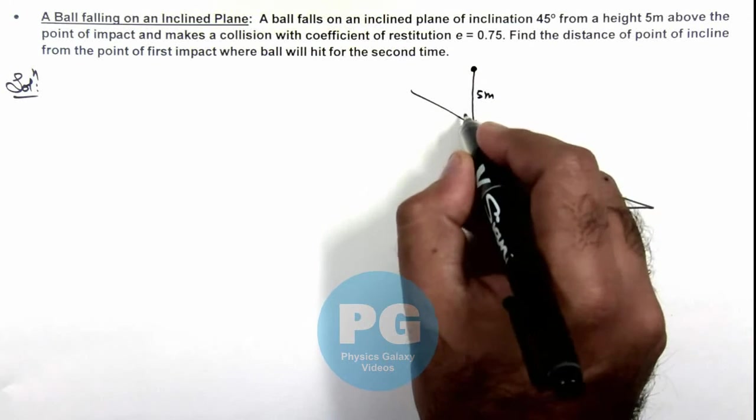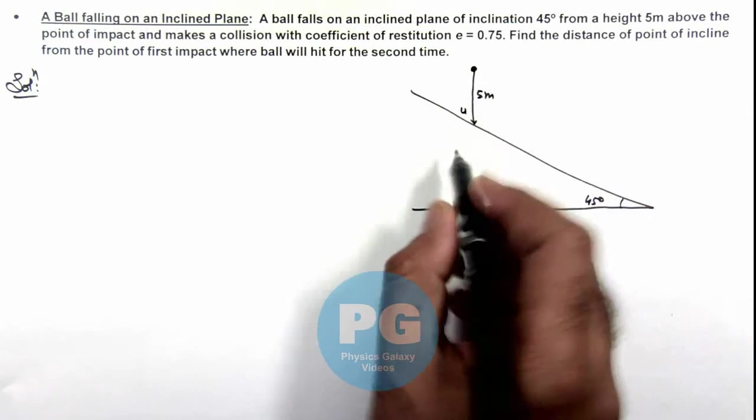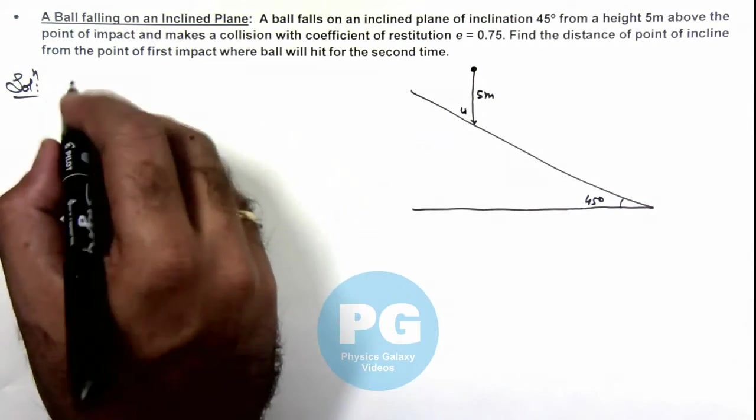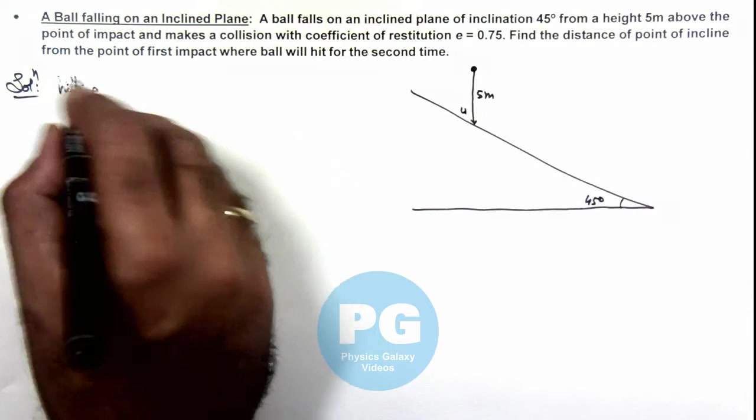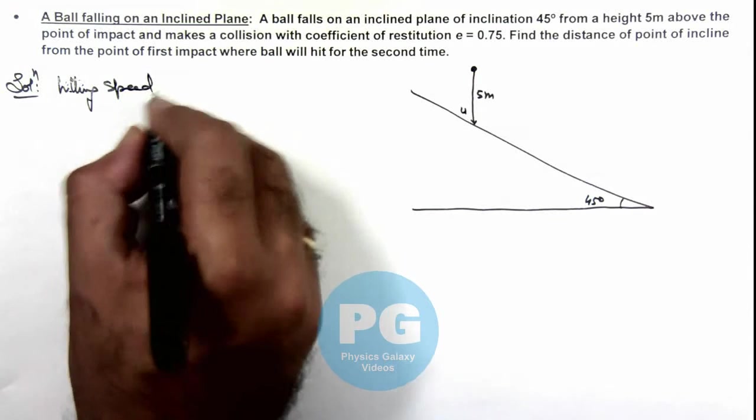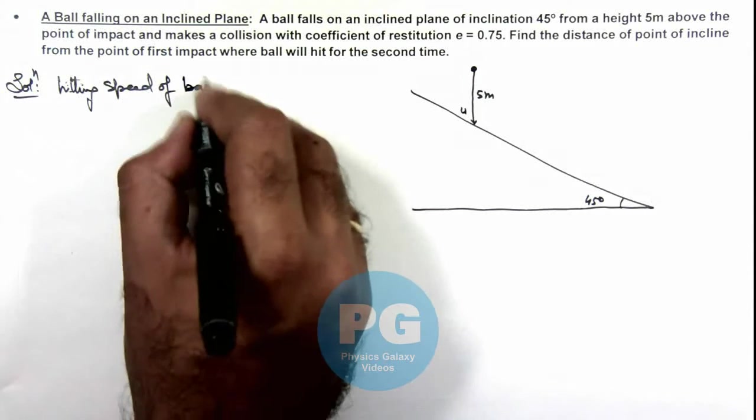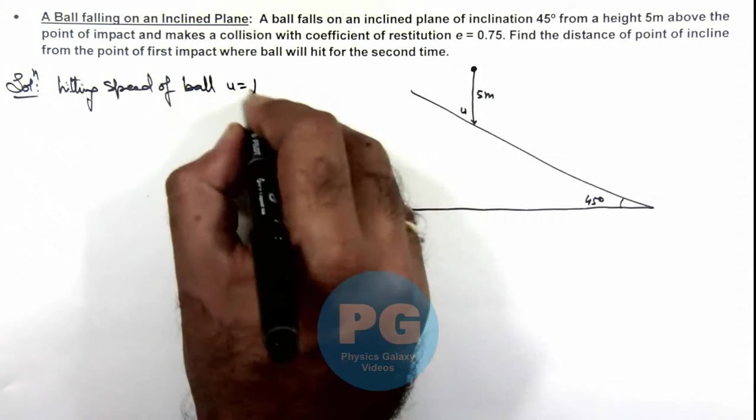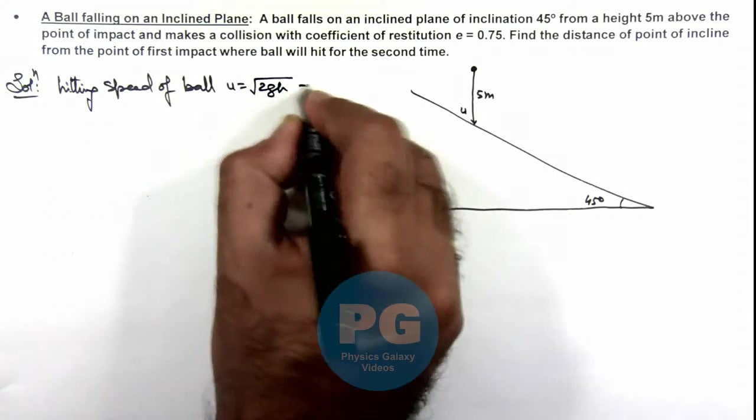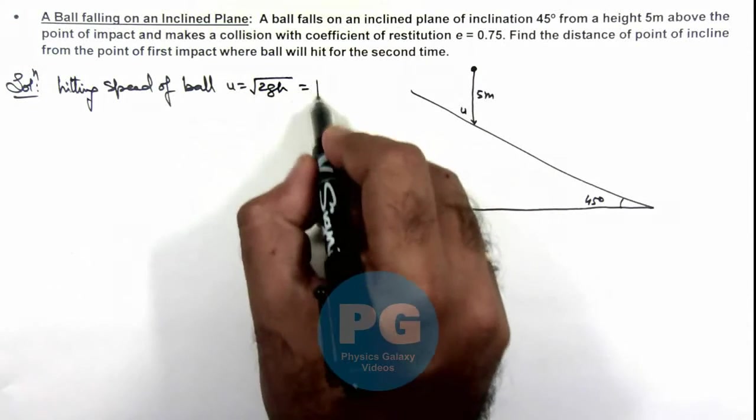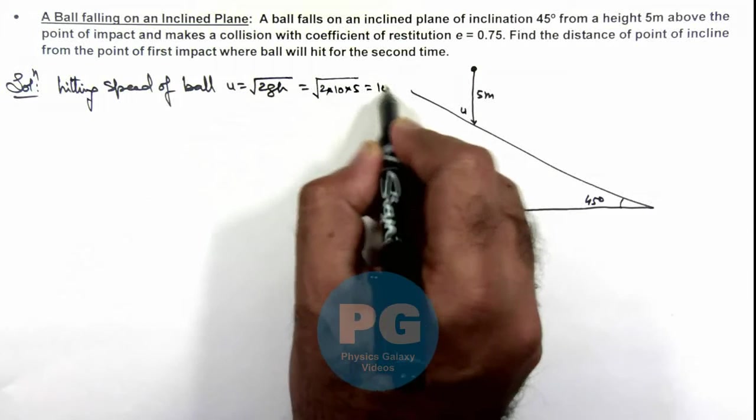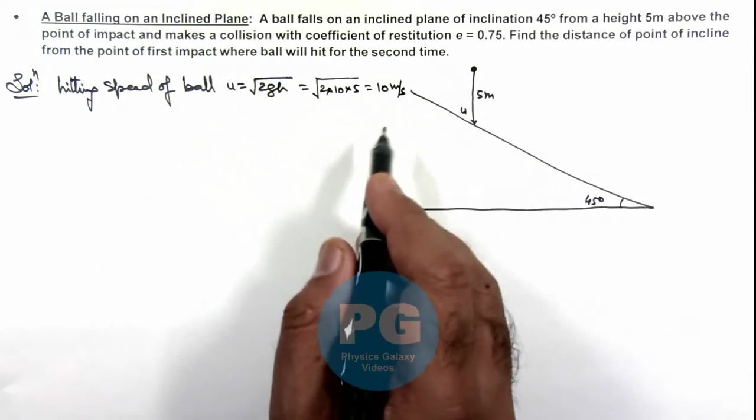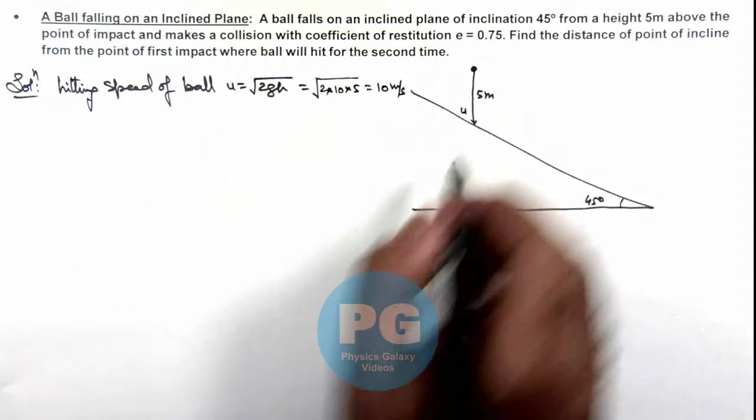In this situation, if the striking speed is u, you can directly write the hitting speed of the ball as √(2gh), which equals √(2 × 10 × 5) = 10 meters per second. This is the speed with which the ball will strike the inclined plane.